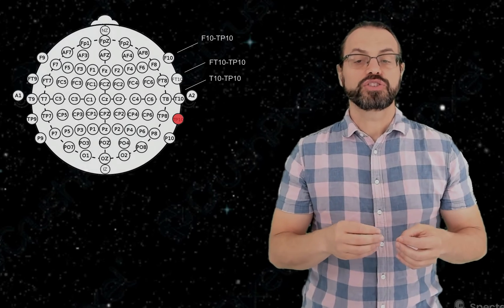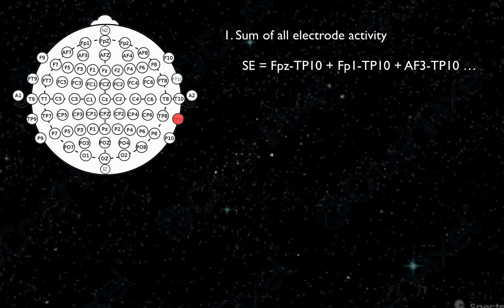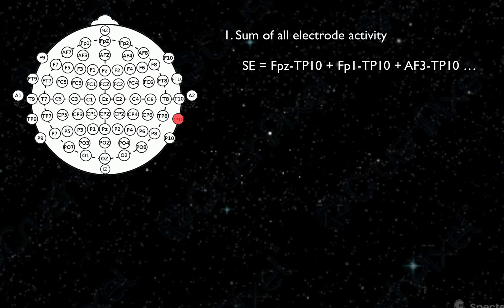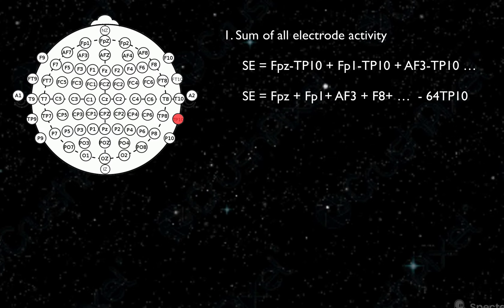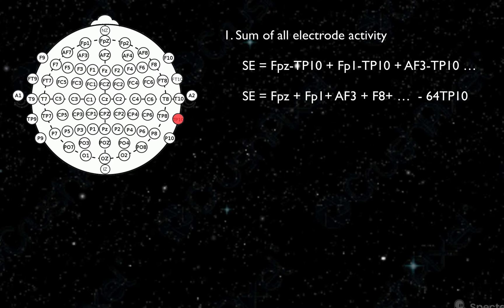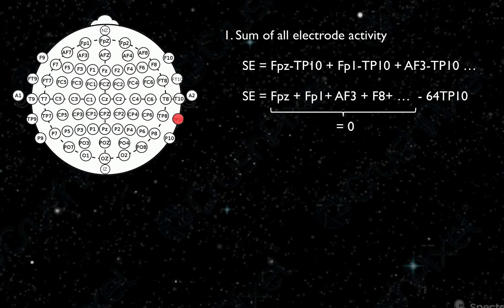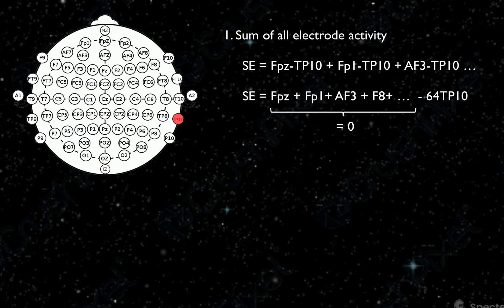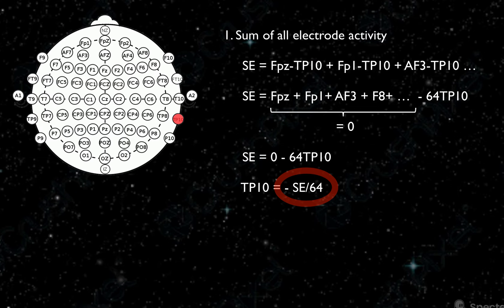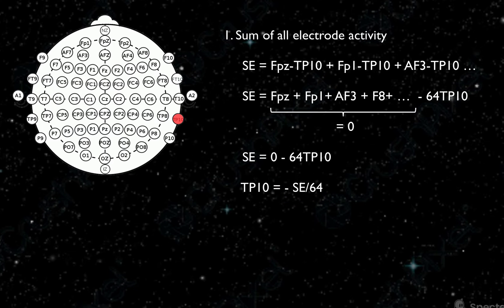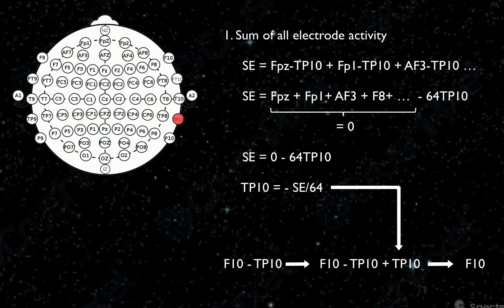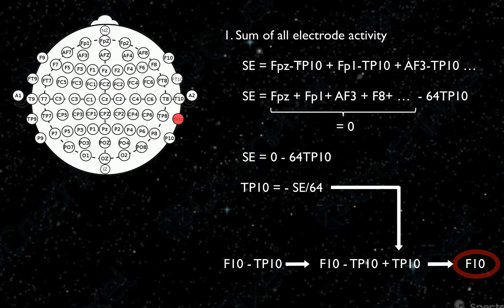We cannot collect EEG data with an average reference. Instead, we collect EEG data with a common reference — it can be any type of reference — and then we transform the reference. The average reference assumption is that the sum of the potential of all channels is zero. Assume 64 channels and a common mastoid reference TP10. If we sum the activity of all 64 channels recorded with reference TP10, this sum equals the sum of the potential of all channels minus 64 times the reference. With the average reference assumption, the sum of all channel potentials is zero, so the potential of the common reference TP10 equals minus the sum of all channels divided by 64. If we want the potential of one channel, for example F10, we can just add back the calculated TP10 potential. Now we have the potential of F10 under the average assumption, and we can do that for all channels.